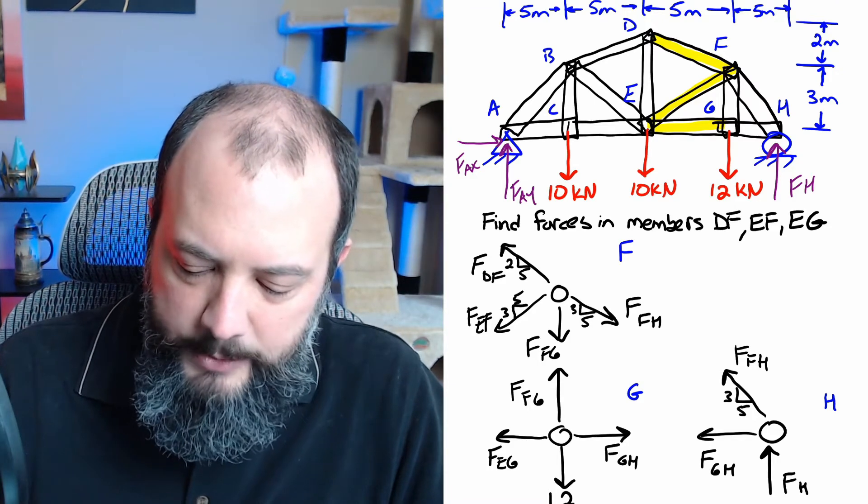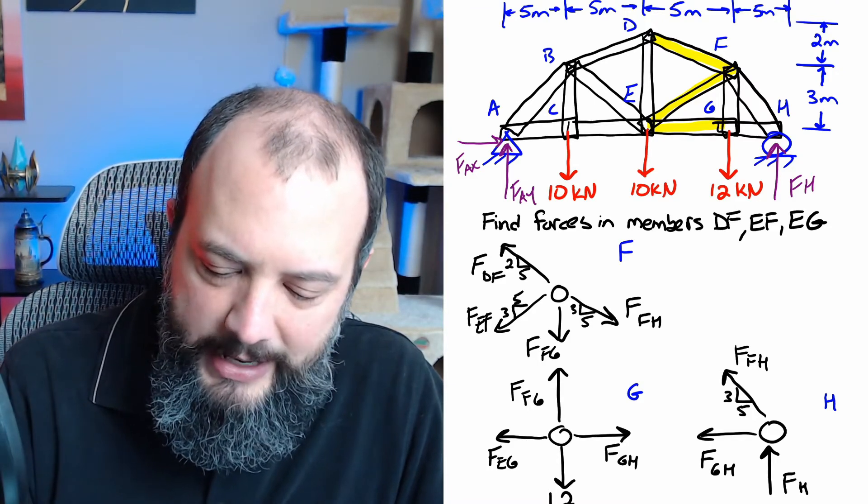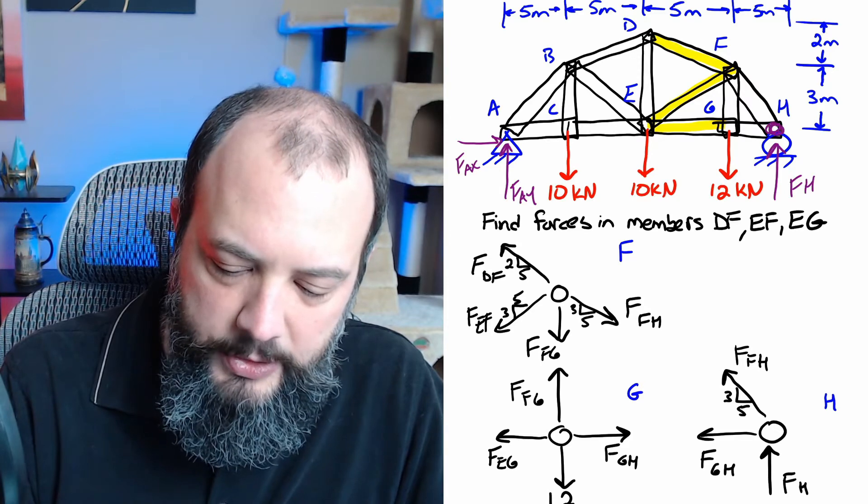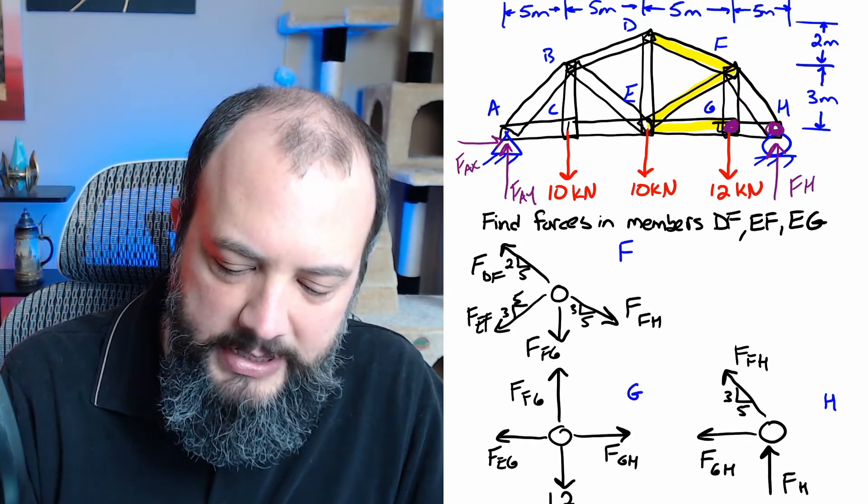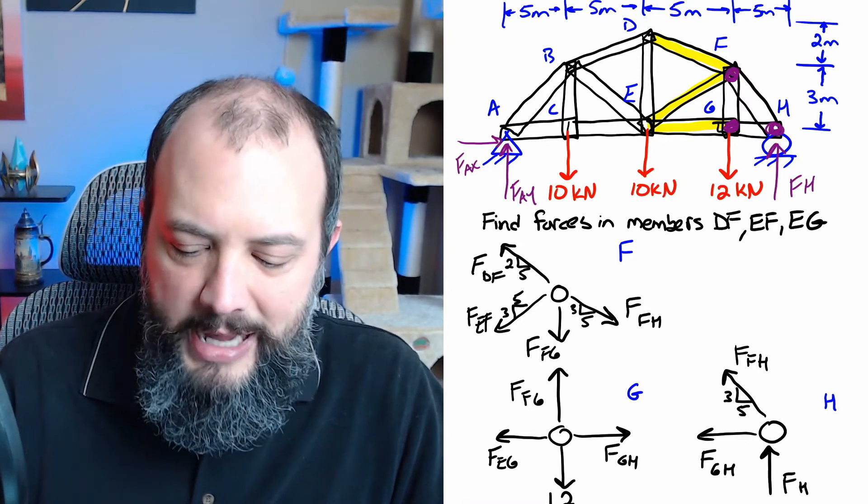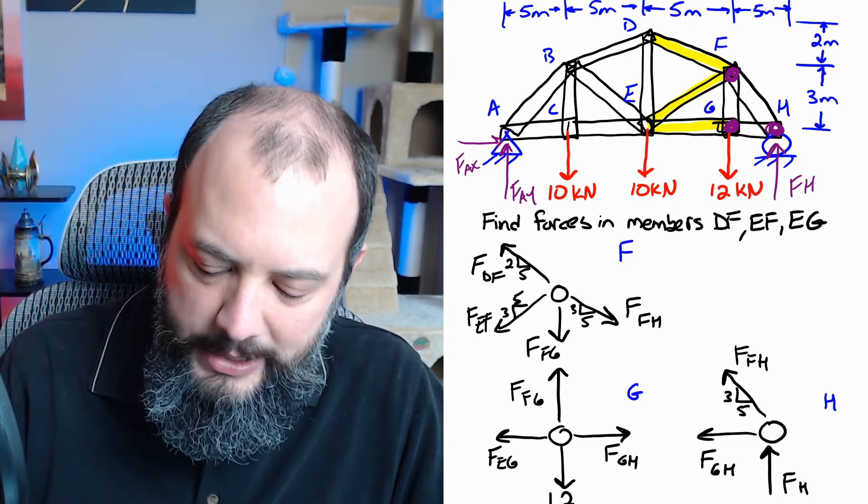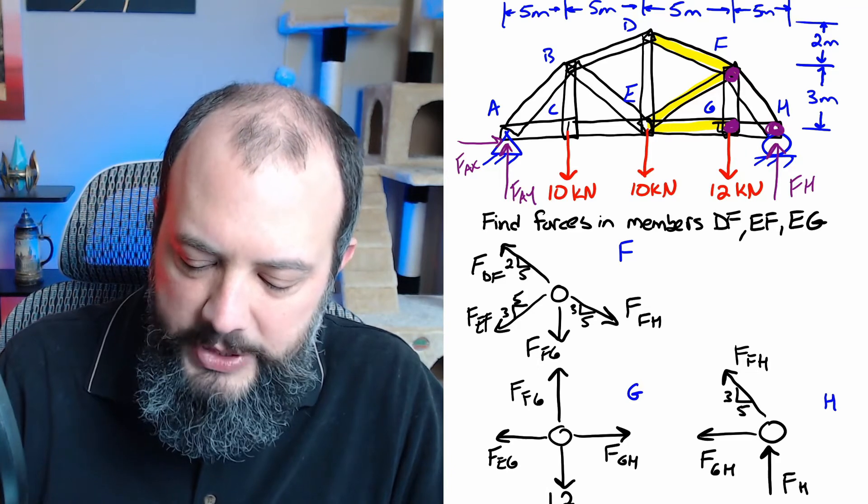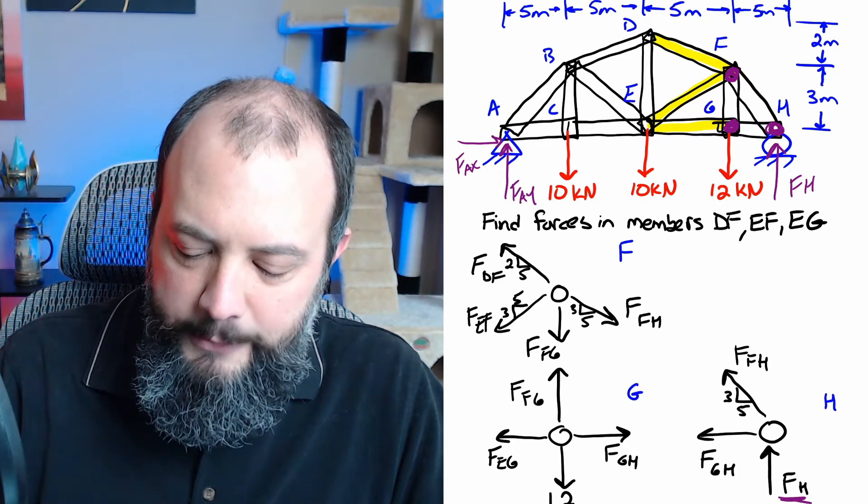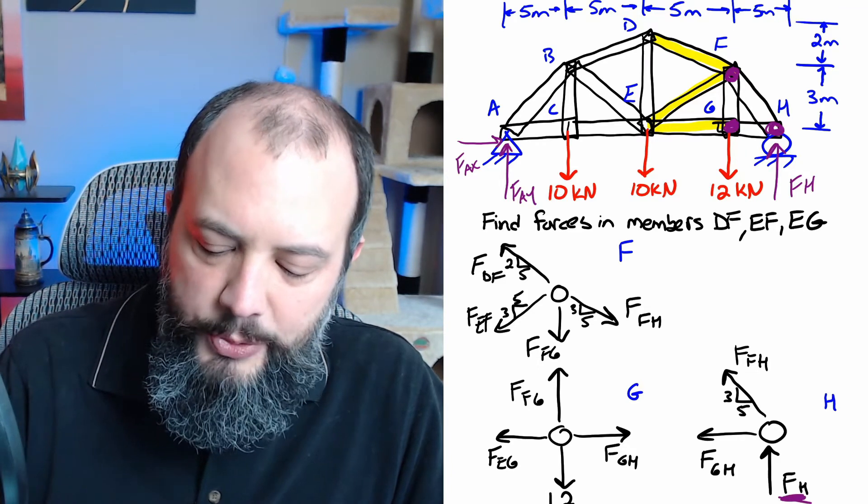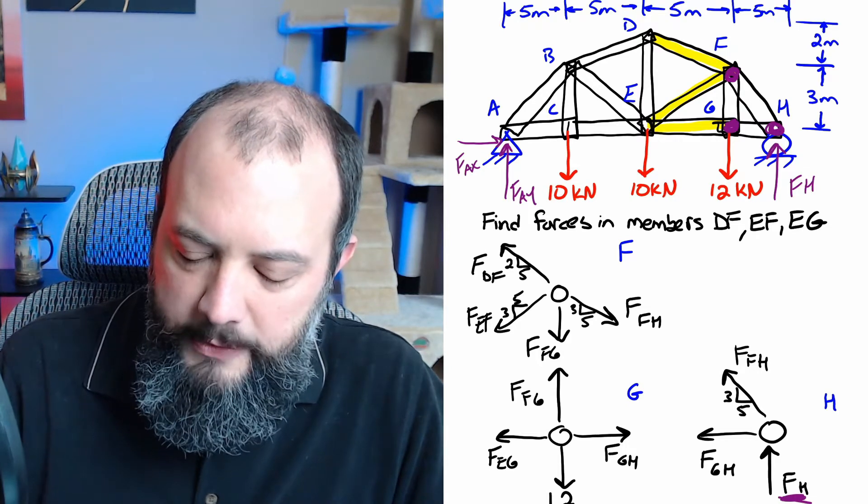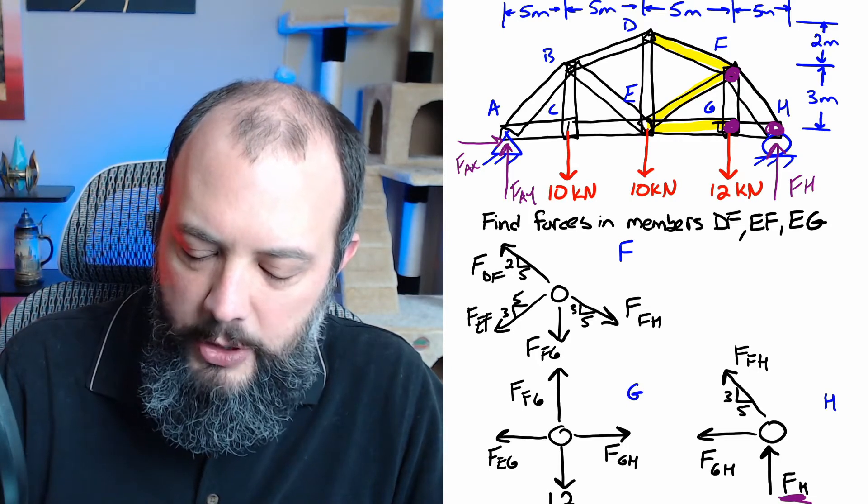So I've drawn free body diagrams for points H, G and F. So on the drawing I'm kind of circling those in purple now up on the top and so if we start at H and zigzag our way through we'll be able to solve for everything. So in particular once we solve for the reaction force at H then the free body diagram at H only has two unknowns and you'll be able to do the sum of forces in the Y direction to solve for FFH and then the sum of forces in the X direction to solve for FGH.